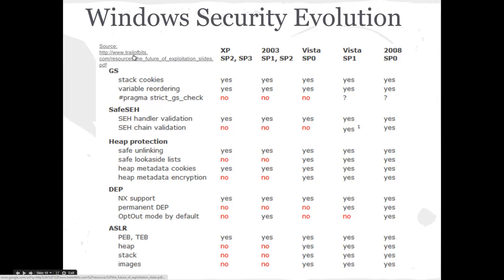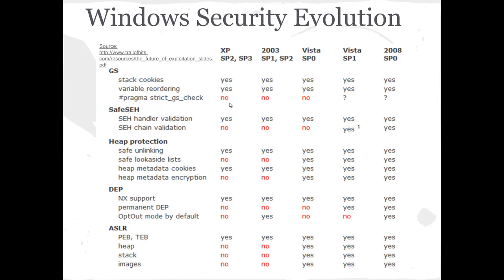There's a really good chart from the people at Trail of Bits illustrating the progression of exploit mitigations from Windows XP to 2008. You can see that in the very beginning they had weak ASLR and weak DEP — not permanent DEP. They did implement safe unlinking, safe stack cookies, and SEH handler validation. You don't need to know SEH for this class — we covered it last year and it's no longer a viable attack factor because it's been adequately solved, which is a good story in the world of security.